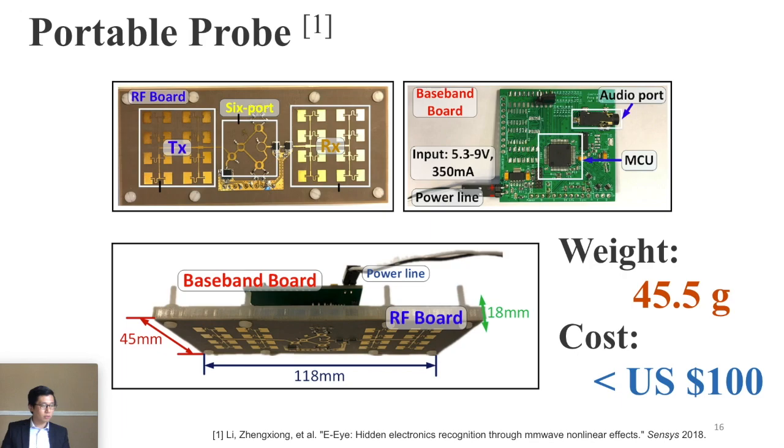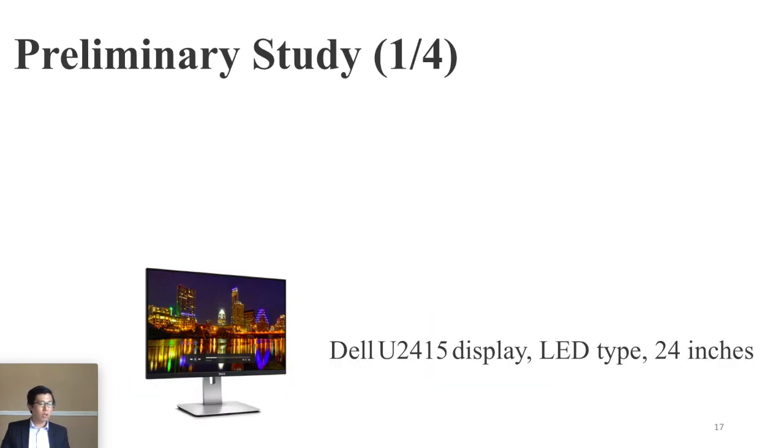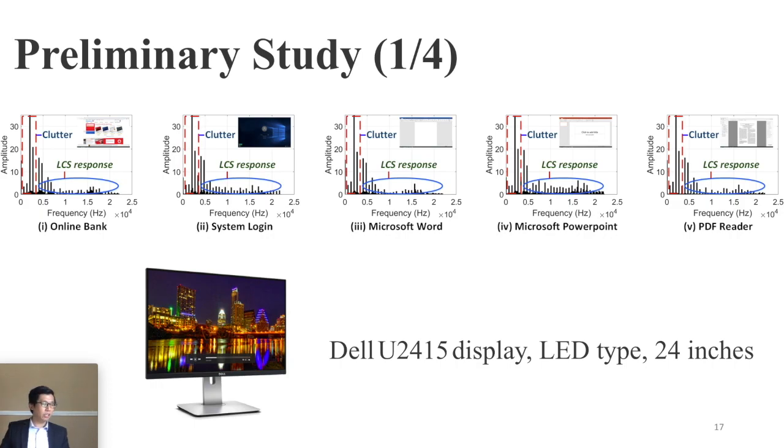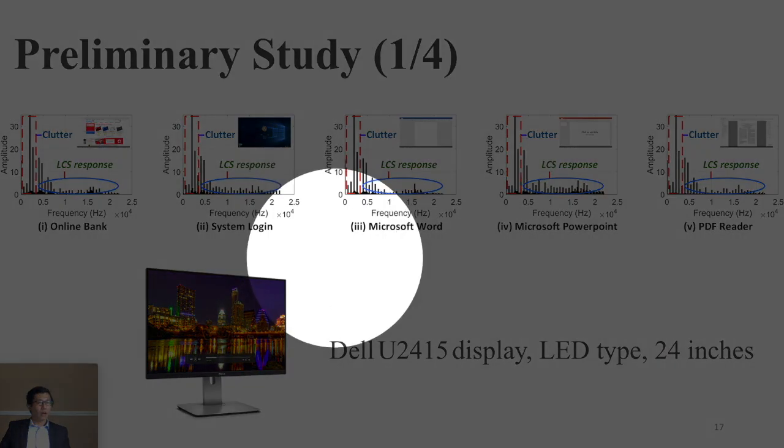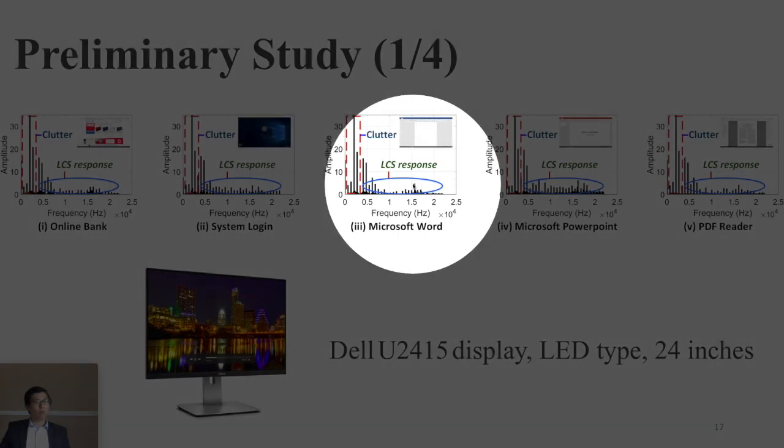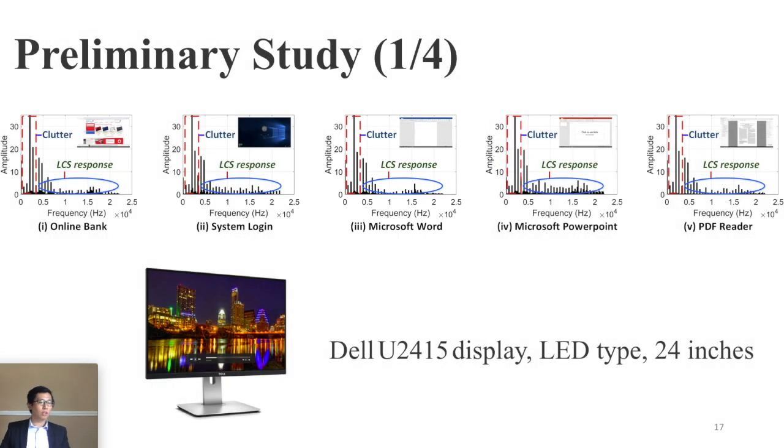And then to further prove our hypothesis, we did a preliminary test. First, we test with three most common electronic devices. First is desktop display, which is LED type and 24-inch size. We test with five very common activities on the screen, like online banking, Microsoft Word, and PDF reader. The results are shown in this image. The x-axis is the frequency of the received response, and the y-axis is the amplitude of the signal. We observe that the spectrum of the received response are quite different, and this difference has huge room for us to recognize the corresponding screen activities.